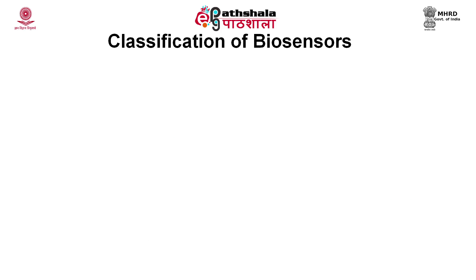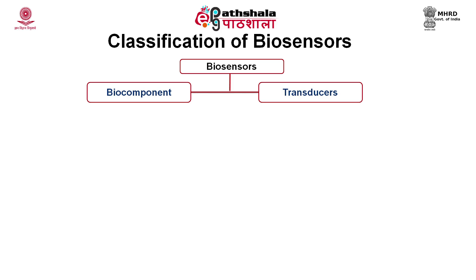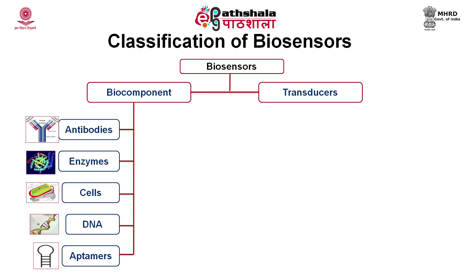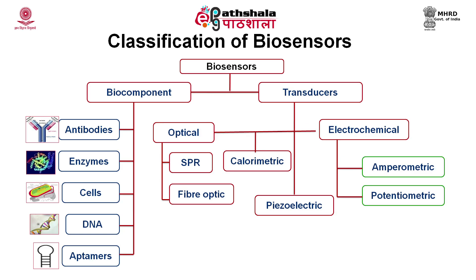We will discuss the classification of biosensors. Biosensors are composed of two components: the biocomponent and the transducer. The biocomponent comprises any molecule of biological origin — it could be antibodies, enzymes, cells, DNA, or aptamers. In the case of transducers, the basic characterization is of four types: they could be of optical nature, calorimetric, piezoelectric, or electrochemical. We will discuss these transducers in detail in later sessions.